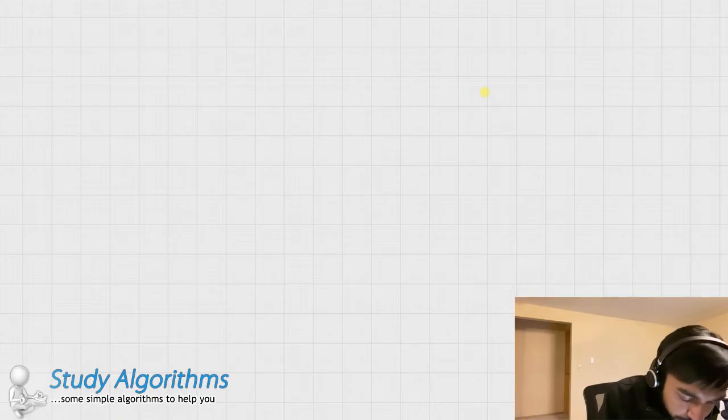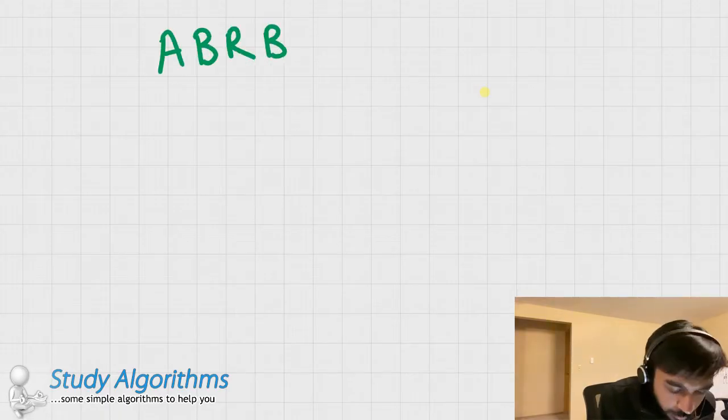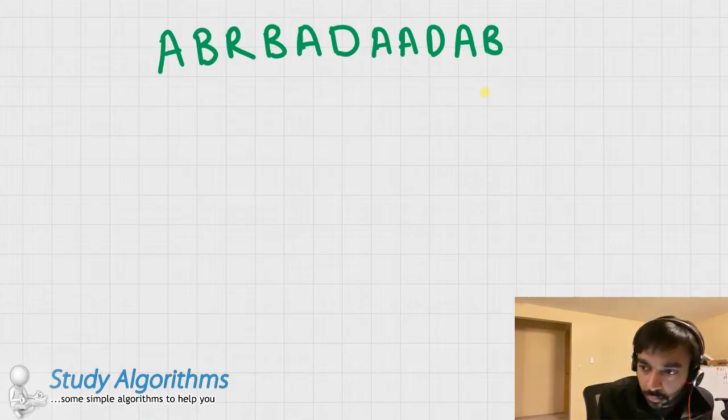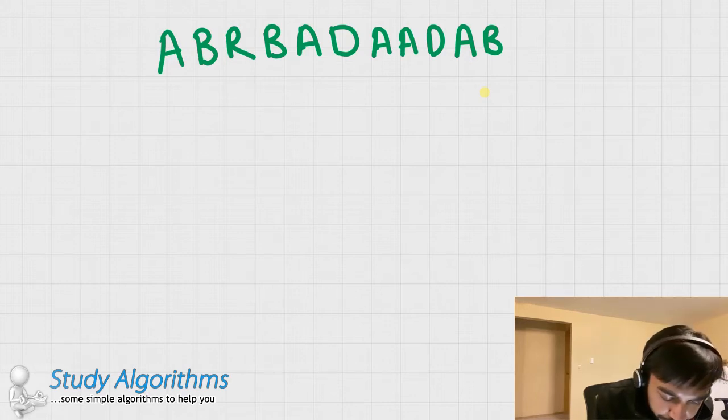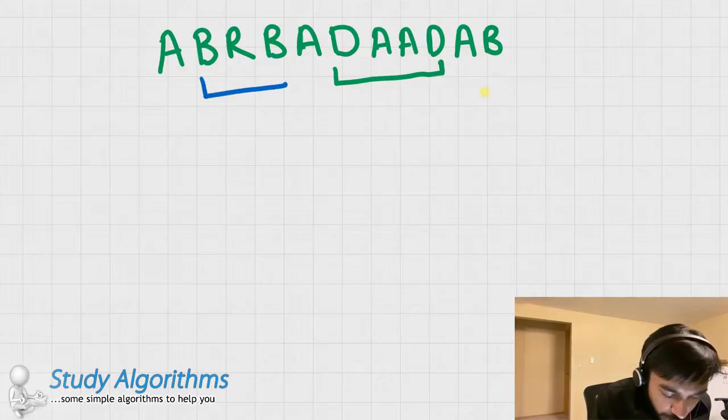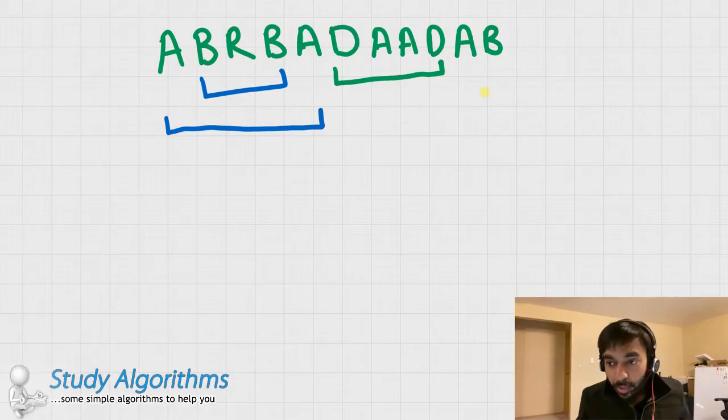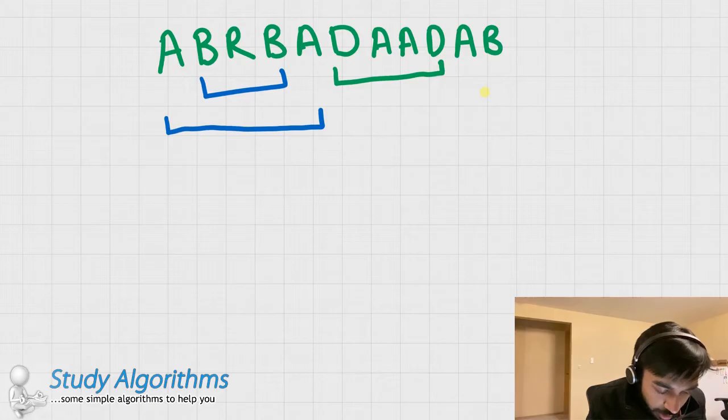Let us say we have this string. If you just glance at it, we can see that this string has multiple palindromes. One of the palindrome being DAAD, or you could see one more palindrome as BRB. Or you could even see another bigger palindrome that is ABRBA. But indeed, if you look closely, there is still a very big palindrome that is BADAADAB.